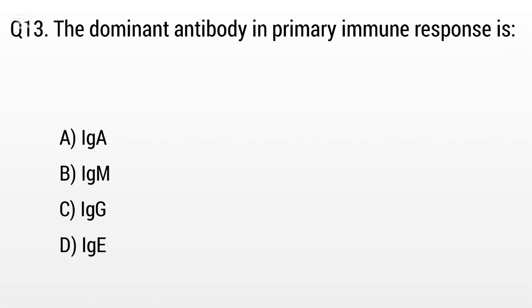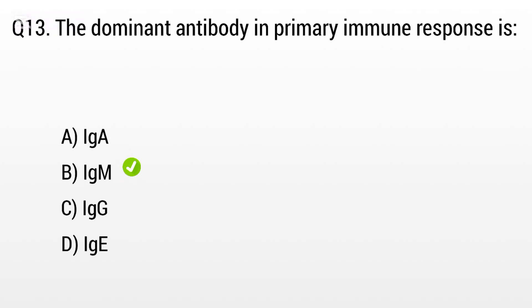Question 13. The dominant antibody in primary immune response is: Option A: IgA, B: IgM, C: IgG, D: IgE. But the right answer is Option B: IgM.